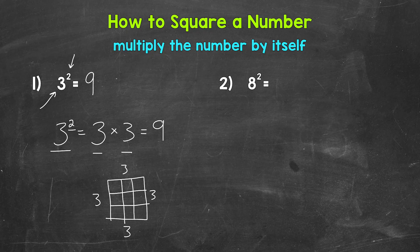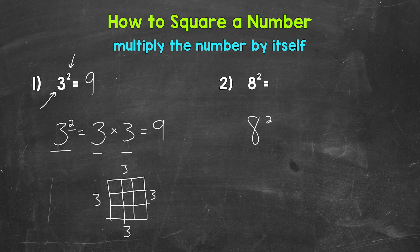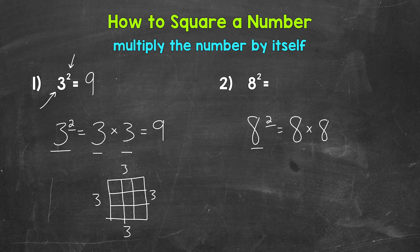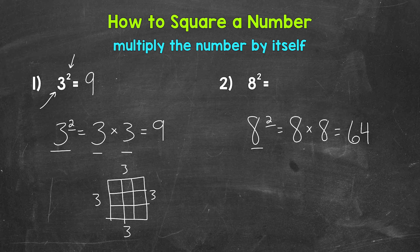Let's move on to number 2, where we have 8 squared. Now 8 squared, that means 8 times 8. So 8 squared equals 8 times 8. The base of 8 expanded out 2 times. 8 times 8 equals 64. So 8 squared equals 64.